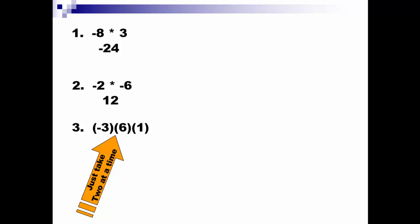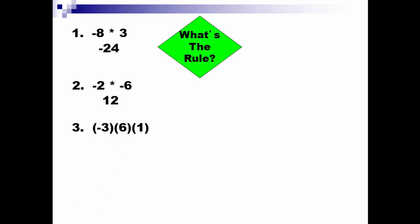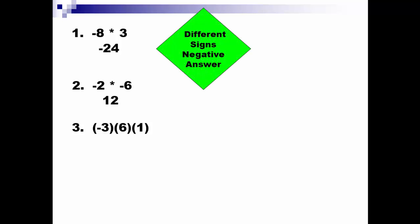Take two at a time. So we do negative 3 times 6. It's multiplication. When the signs are different, the answer will be negative. A negative times a positive is a negative — 3 times 6 is 18 — so that's negative 18, still times negative 1.